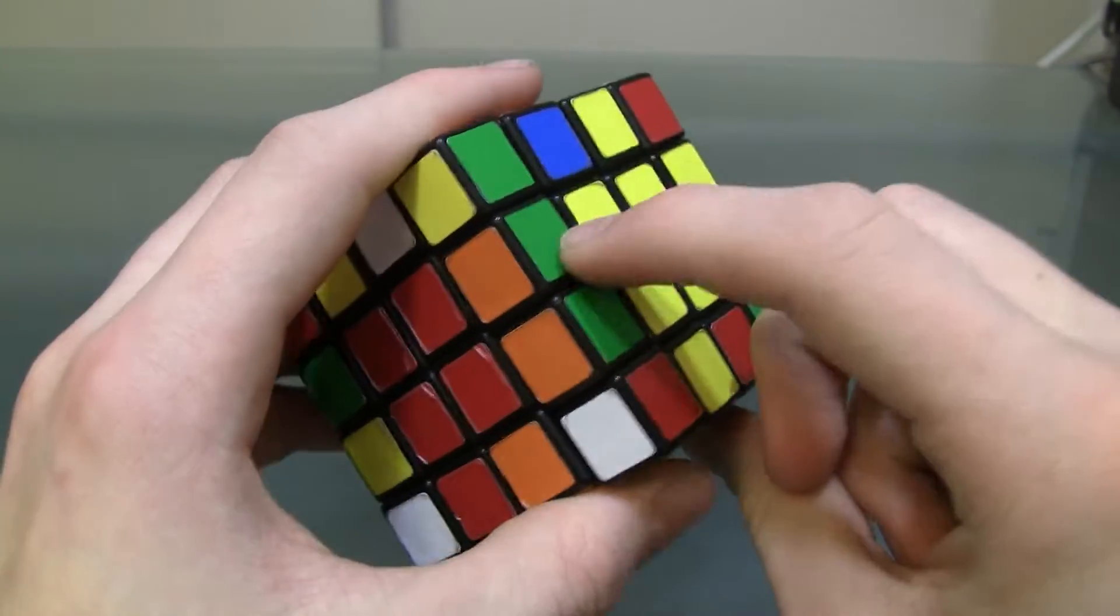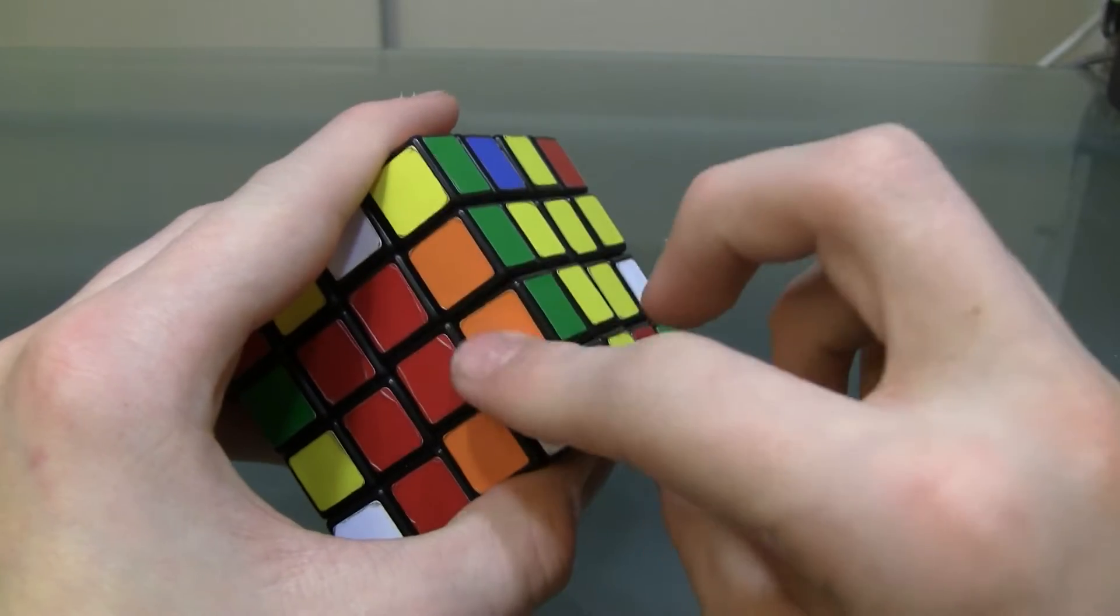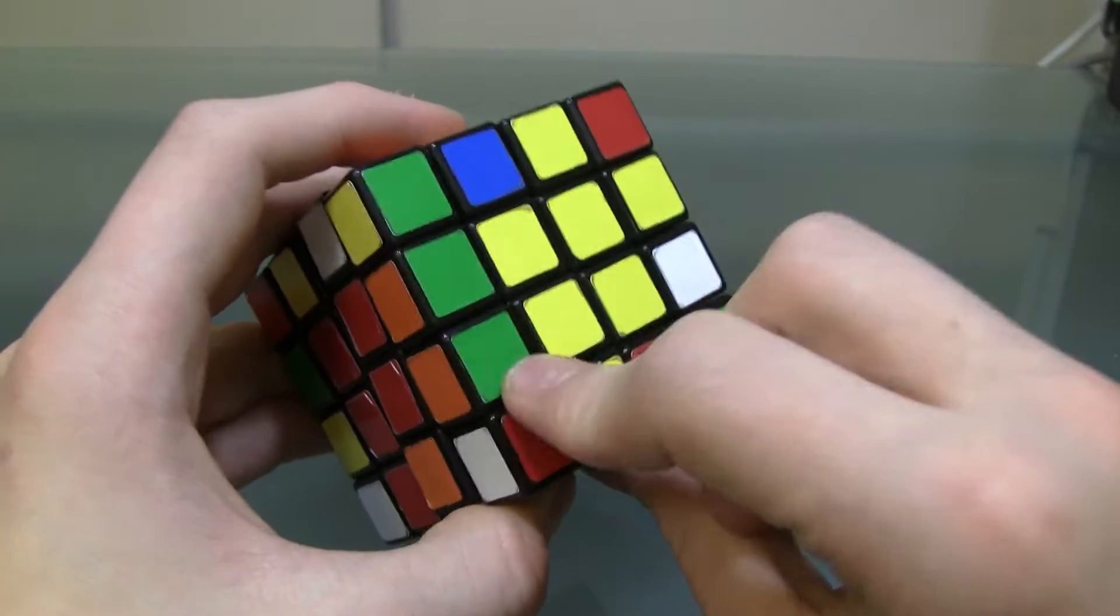So, this is a correct example of what you want, where you've got two edges paired up like this, and they're in the correct orientation, so I've got orange and orange, and green and green.